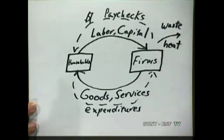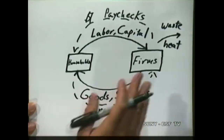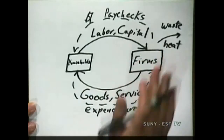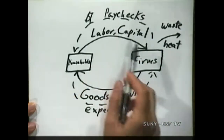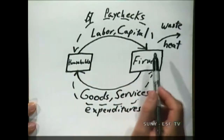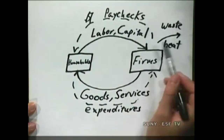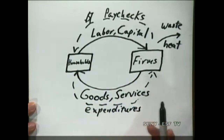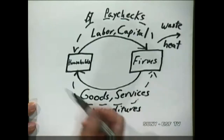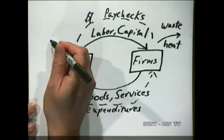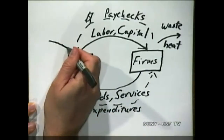Now it obeys the second law of thermodynamics to some extent, because we know that waste heat has to be there. We've got this system going around and around with waste heat coming out of it. What's going to happen over time? It's going to stop. So what do we have to do?